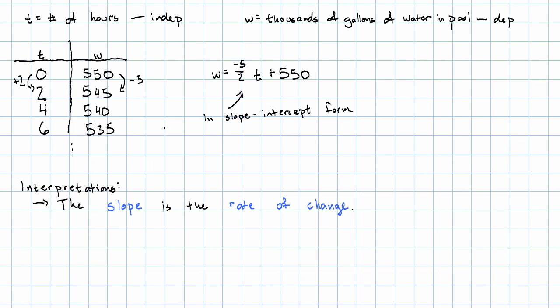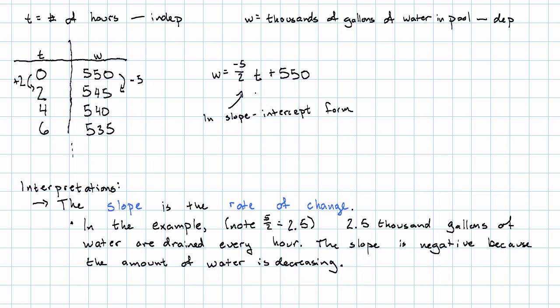So that means in this problem, note that negative 5 halves is negative 2.5. 2.5 thousand gallons of water are drained every hour. But that's the rate of change of w with respect to t. Why is it a negative number? Because the amount of water is decreasing.